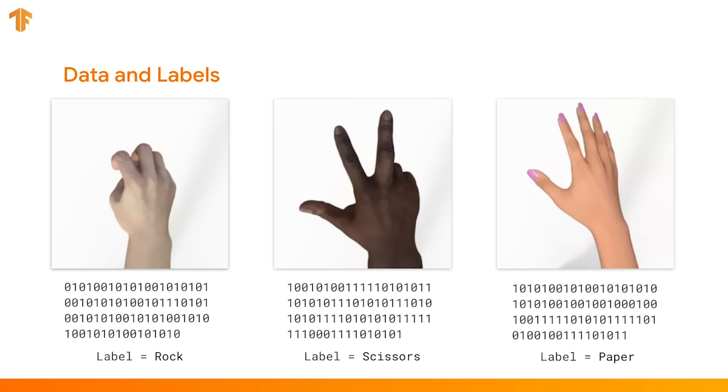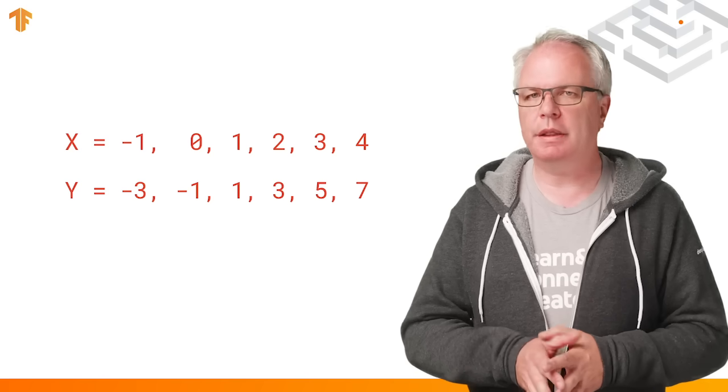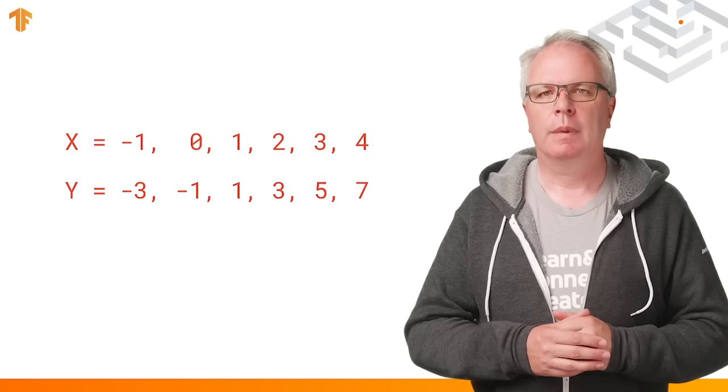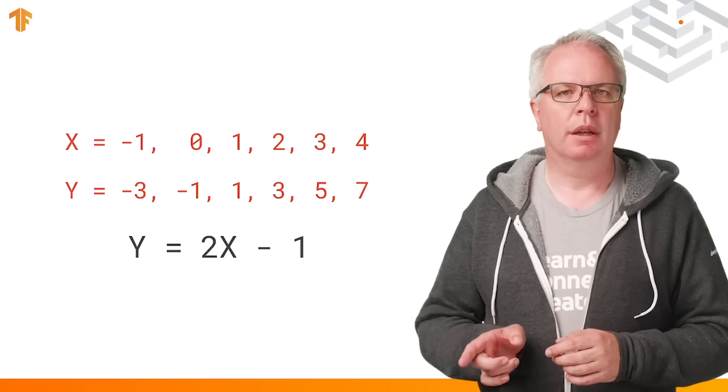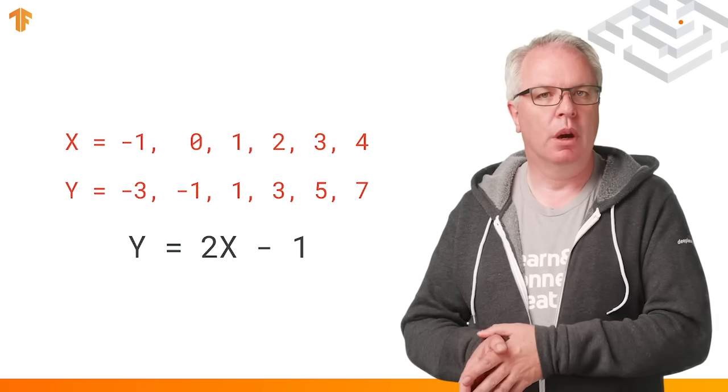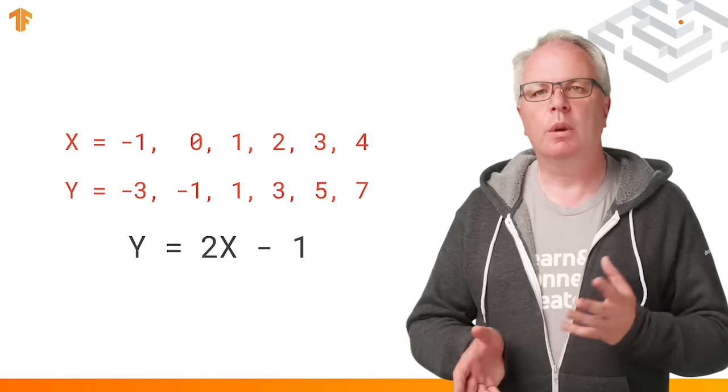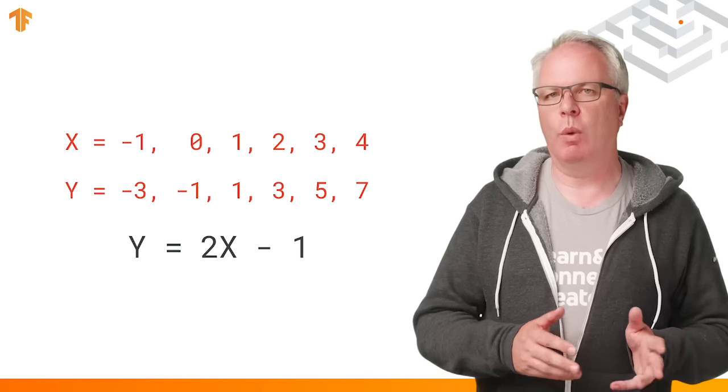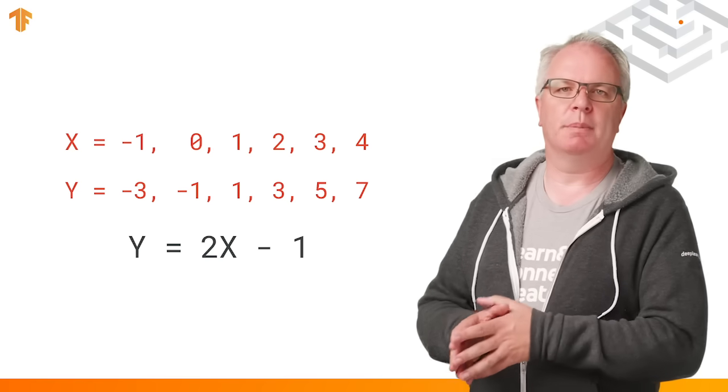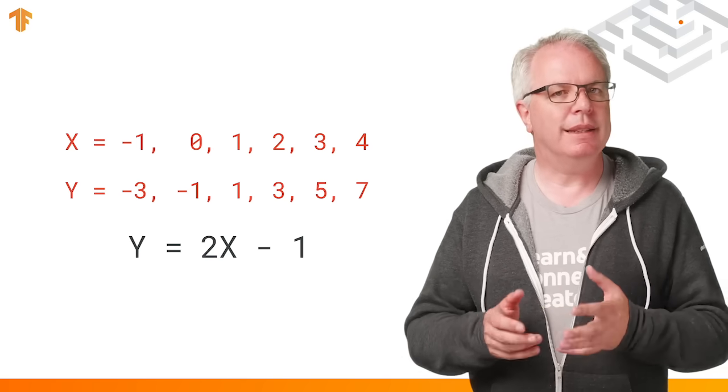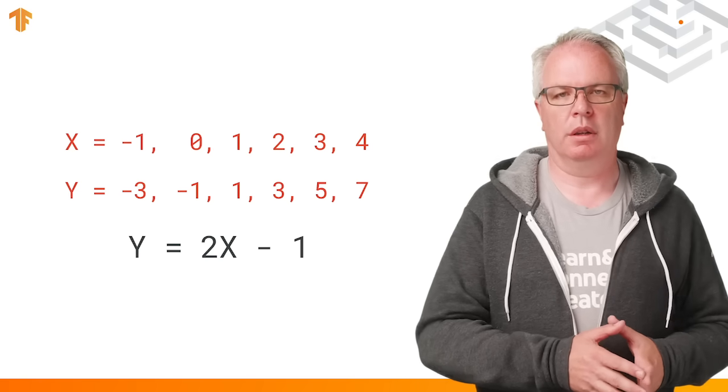Before we write a neural network that learns something as complex as rock, paper, and scissors, let's use a much simpler example. Take a look at these numbers. There's a relationship between the x and y values. Can you see it? It's actually y equals 2x minus 1. So if you saw it, how did you get that? Maybe you noticed that the y value increases by 2, while the x value only increases by 1, so it was y equals 2x plus or minus something. And then you may have seen that when x was 0, y was minus 1, so you figured y equals 2x minus 1 would be a good guess. And then you took a look at the other numbers and saw that it worked. That's exactly the principle that all machine learning works on.